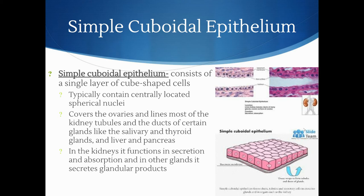Simple cuboidal epithelium consists of a single layer of cube-shaped cells that typically contain centrally located spherical nuclei. It covers the ovaries and lines most of the kidney tubules and the ducts of certain glands like the salivary, thyroid glands, liver, and pancreas. In the kidneys, it functions in secretion and absorption; in other glands, it secretes glandular products such as testosterone from the testes or cortisol and aldosterone from the adrenal glands.